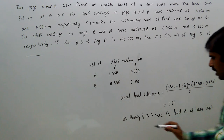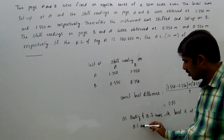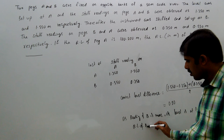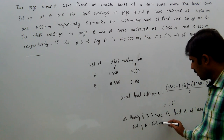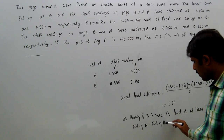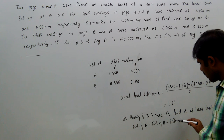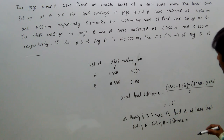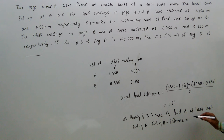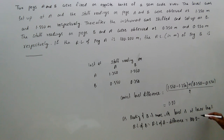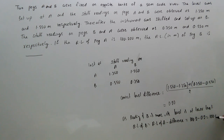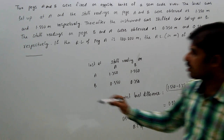Therefore, RL of B equals RL of A minus the difference. That equals 100.200 minus 0.200, which equals 100. So 100 is the answer.